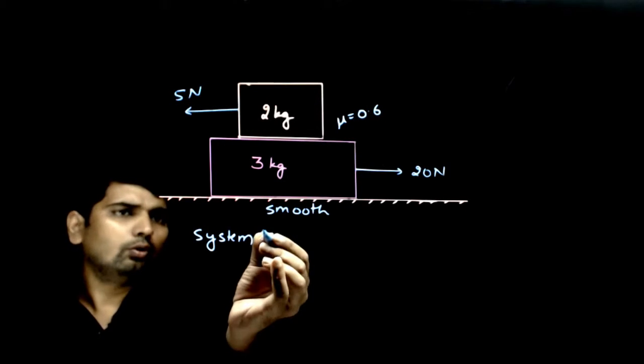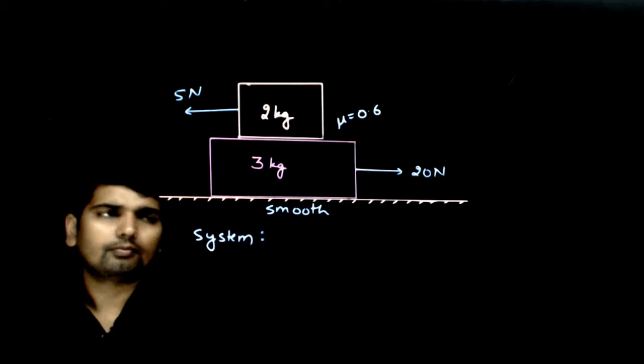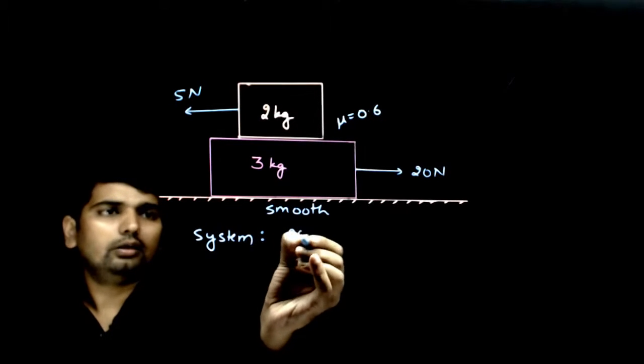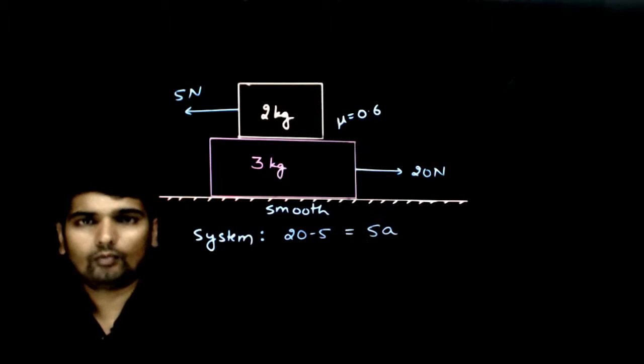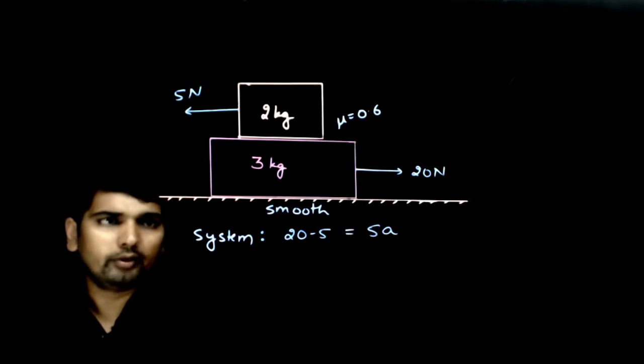So for the whole system along x direction, I can say that 20 minus 5 equals 5A, where A is the common acceleration.